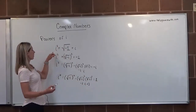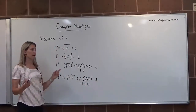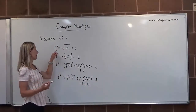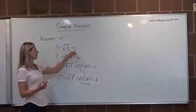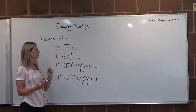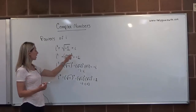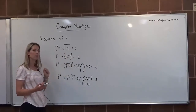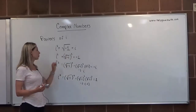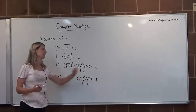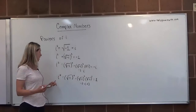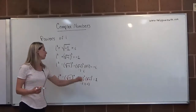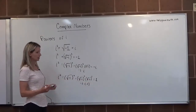So the four things we want to think about here: i to the first is i, i squared is equal to negative 1, i cubed is equal to negative i, and i to the fourth is equal to positive 1.